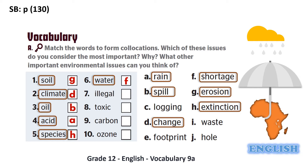People talk about illegal logging, which is when people violate national regulations for cutting down trees — they are committing this crime. So letter C is the answer for number seven. And when chemicals that pollute the air and contaminate the soil and water are thrown away, they are considered toxic waste. So letter I is the answer for number eight.